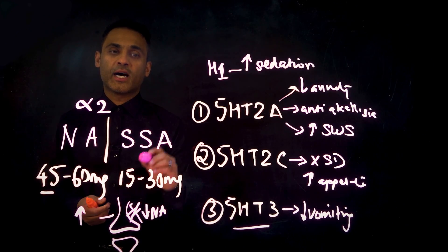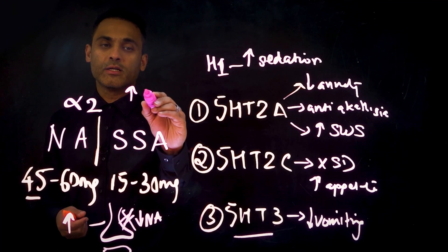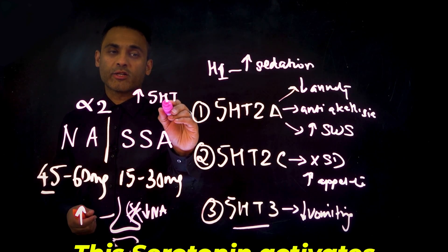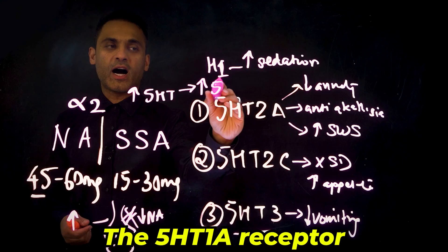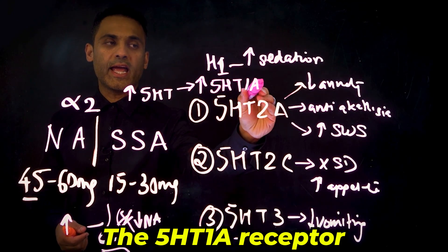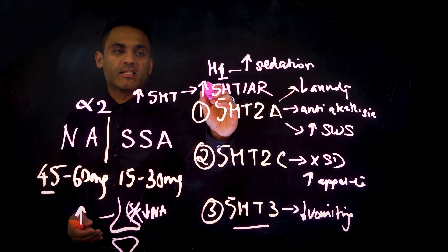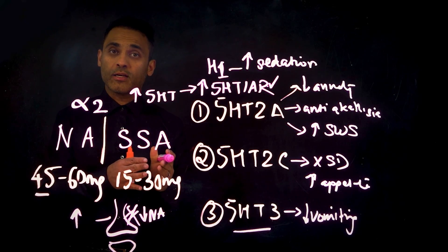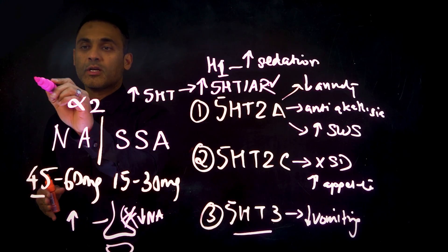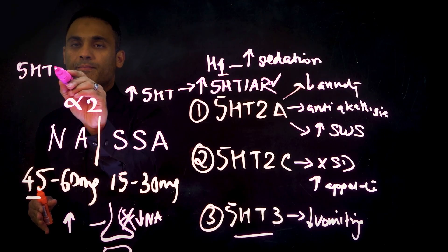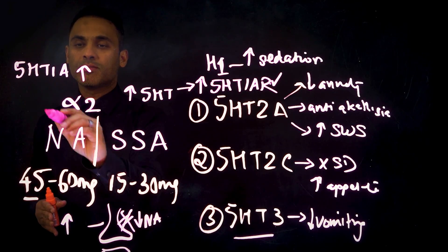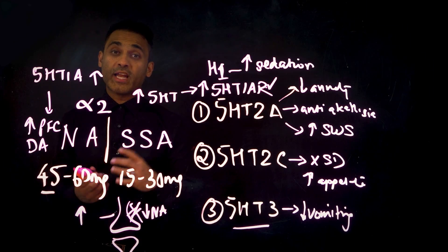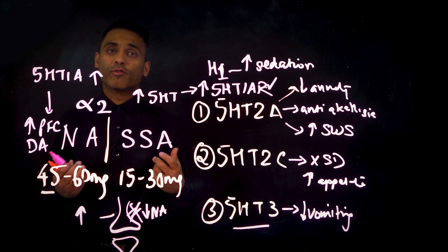And finally, besides the increase in serotonin that we just talked about, you see, this serotonin activates the 5-HT1A receptor. Activation of the 5-HT1A receptor has an interesting effect on dopamine. So 5-HT1A activation increases prefrontal cortex dopamine. So now, when we think about mirtazapine overall,